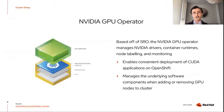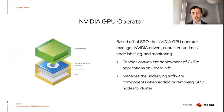The NVIDIA GPU operator is based off of SRO and is used to deploy and manage NVIDIA GPU drivers, container runtimes, node labeling, and GPU monitoring. The GPU operator device plugin labels nodes with the number of GPUs they have as a resource — similar to CPU or memory — so that it can be requested and allocated to pods. The pods used to run GROMACS use resource requests and limits to ensure they are scheduled one per node on GPU nodes. The GPU operator also enables monitoring of GPU usage metrics like power, memory, and percent utilization, viewable in the Prometheus dashboard in the OpenShift console.